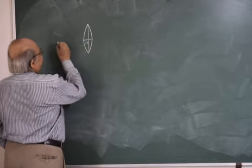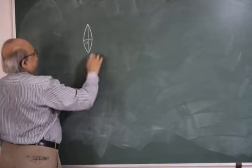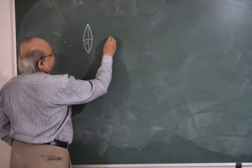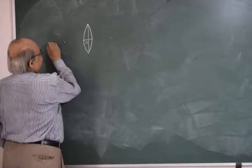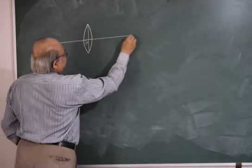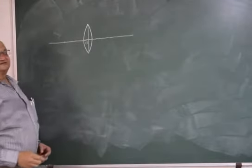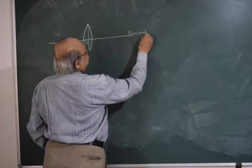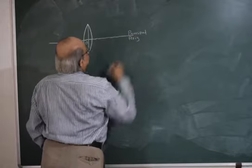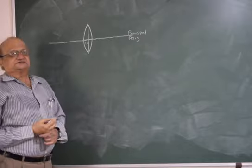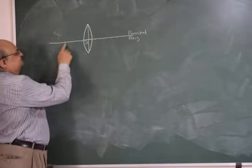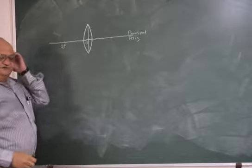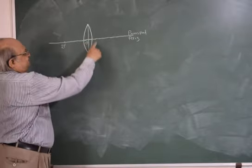We will have an optical centre here. For this particular surface, our centre of curvature will be somewhere here, and for this surface our centre of curvature will be somewhere here. The line passing through both centres of curvature as well as the optical centre will be our principal axis. In the case of lenses, the centre of curvature is called 2F. For this surface the 2F is here.